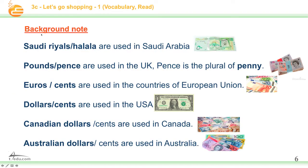Let's talk about money and prices. We have Saudi riyals and halala — used in Saudi Arabia. Pound and pence are used in the UK. Pence is the plural of penny, everybody — talking about notes and coins. You have pounds and pence, and pence is the plural of penny.